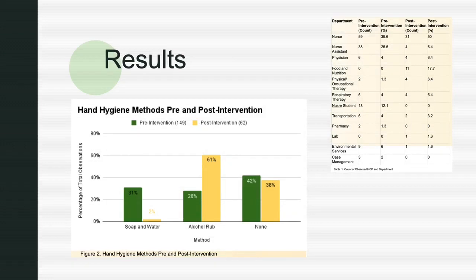Here are our results. The green shows the pre-intervention and the yellow shows the post-intervention. Unfortunately, the use of soap and water decreased from 31% to 2%. The use of alcohol rub increased from 28% to 61%, and the use of no hand hygiene decreased from 42% to 38%. The table on the right shows the department from which our observations were collected.